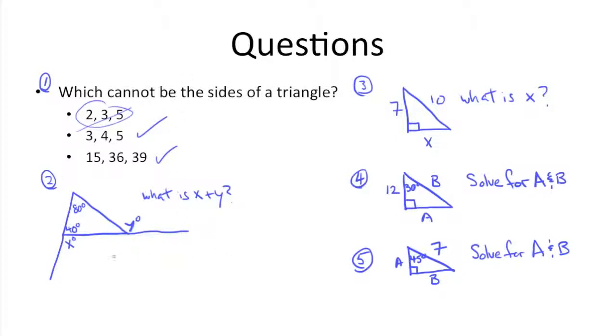Number two, what is x plus y? So in this case we have 40 degrees and 80 degrees inside the triangle, which means that we know that the third angle has to be, this adds up to 120, so this has to be 60, because the interior angles of a triangle have to add up to 180.